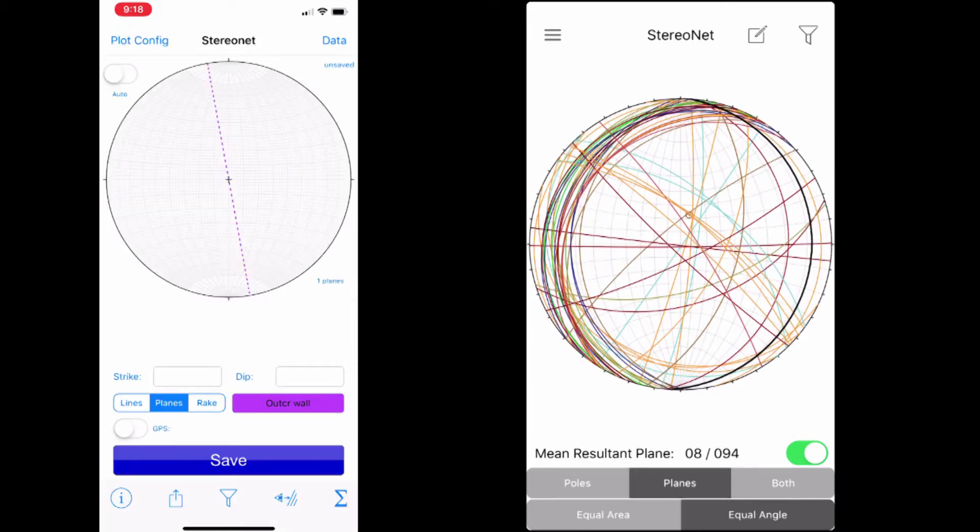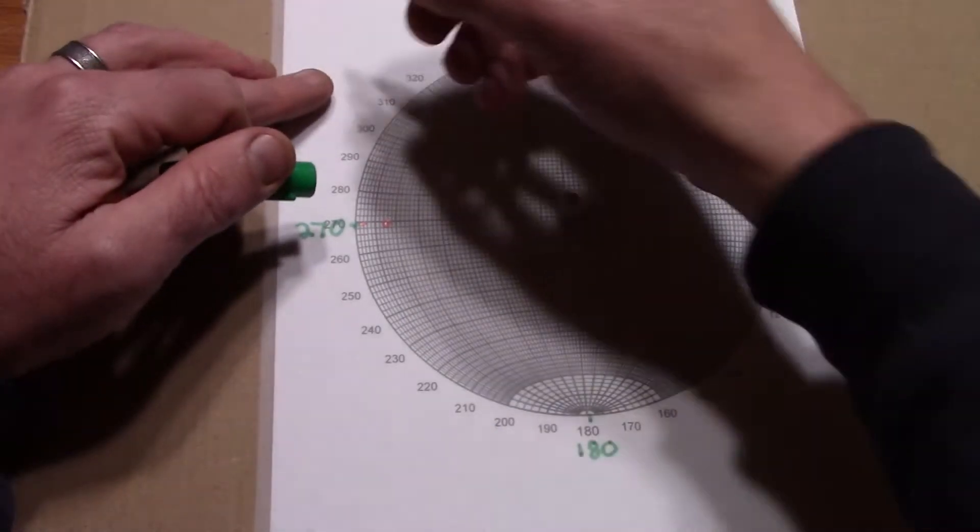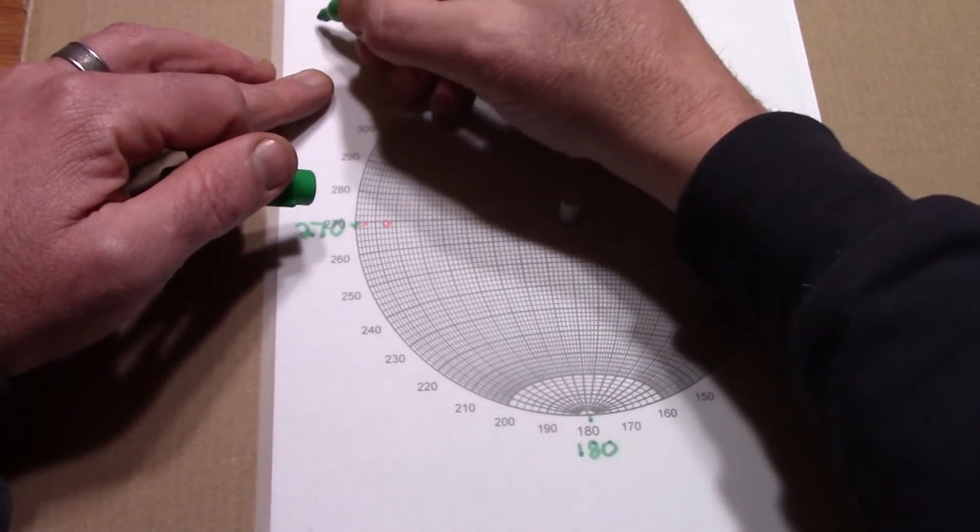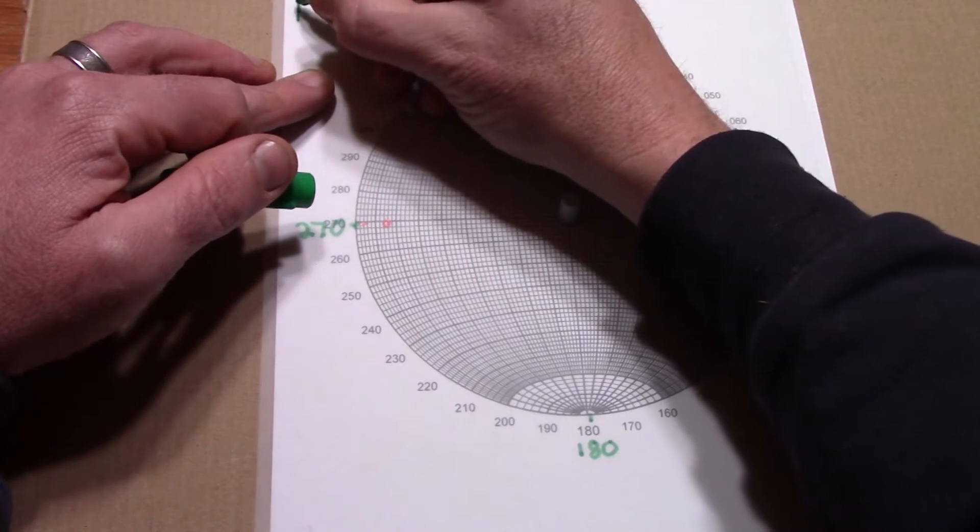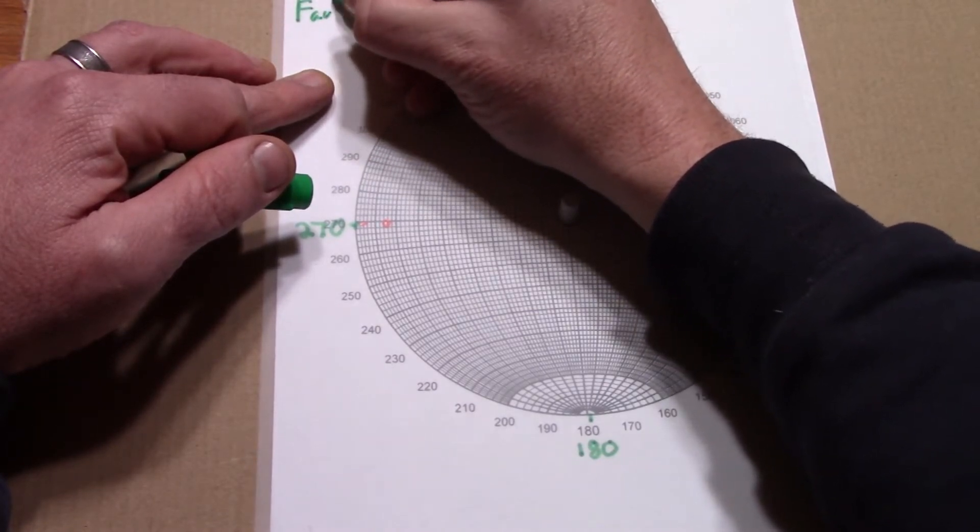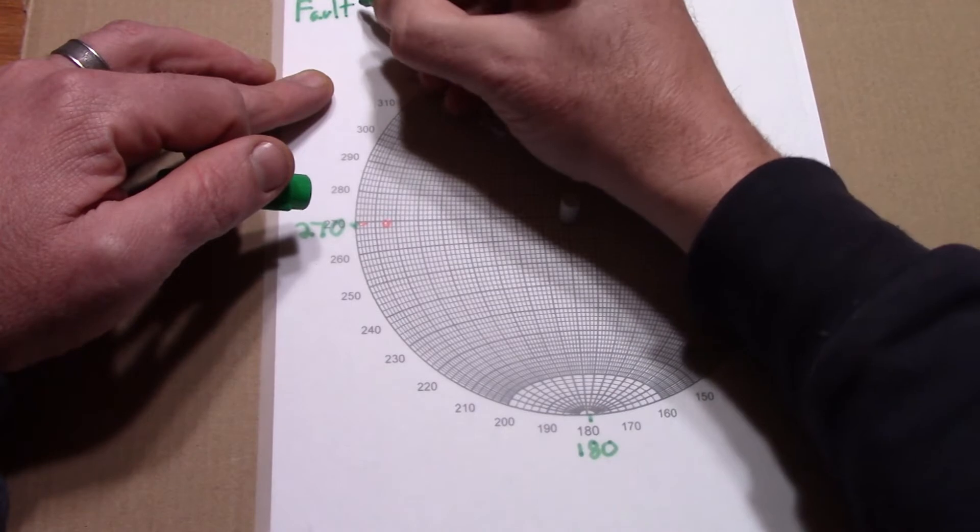Since we're on linear features, here's another StereoNet trick. We can plot a linear feature that lays on a planar surface, like slicken sides on a fault surface.